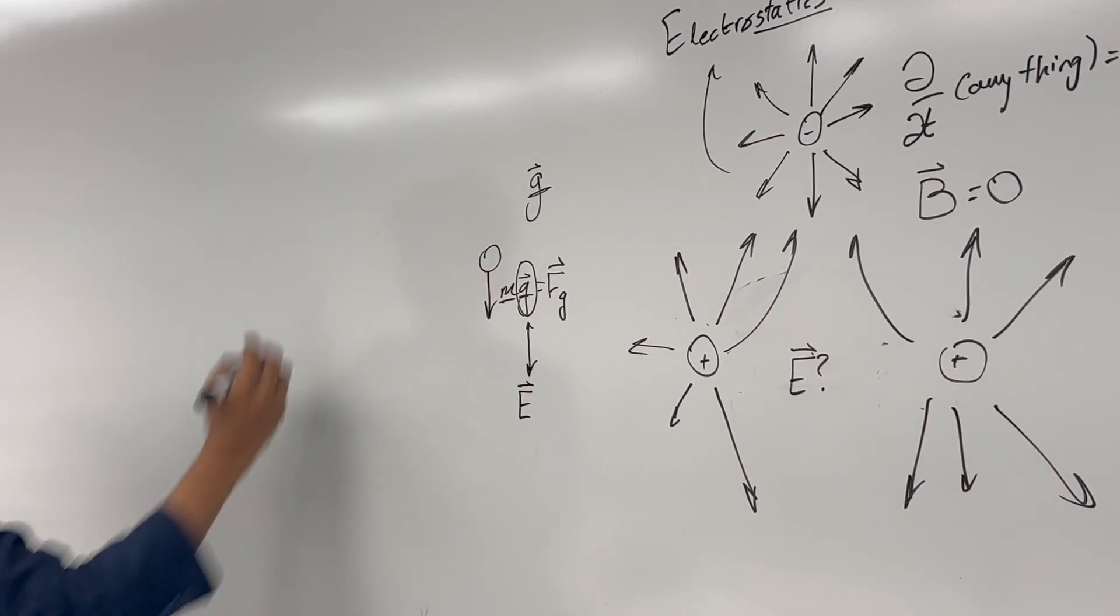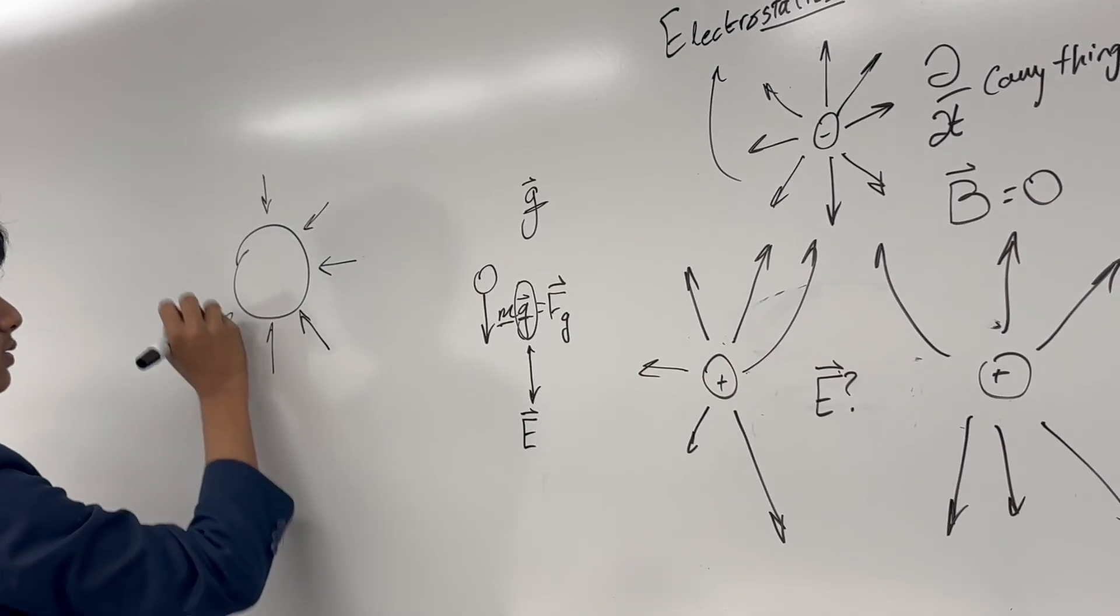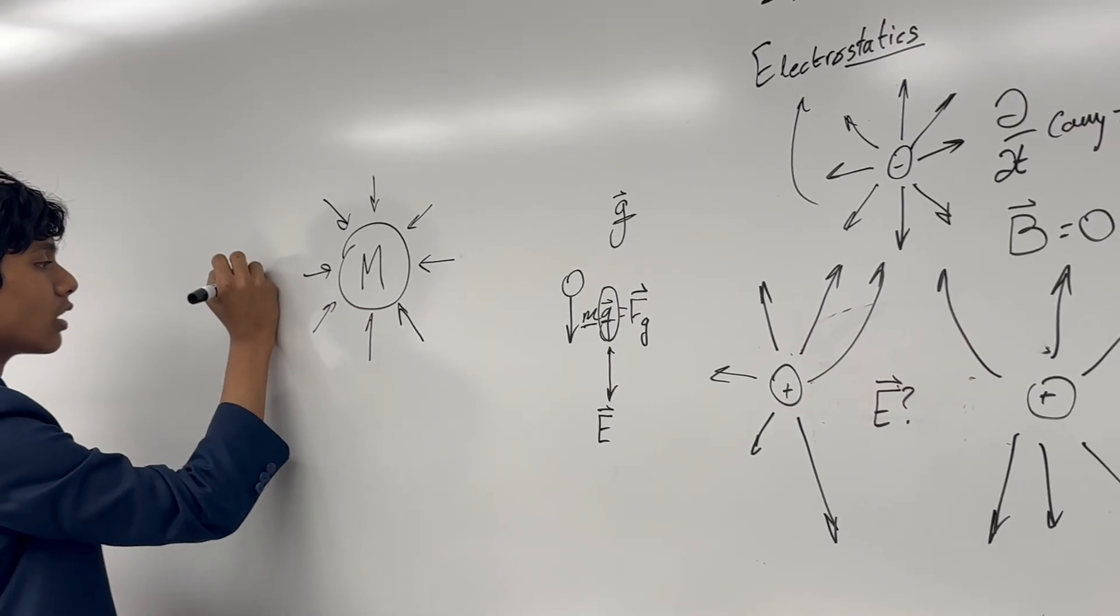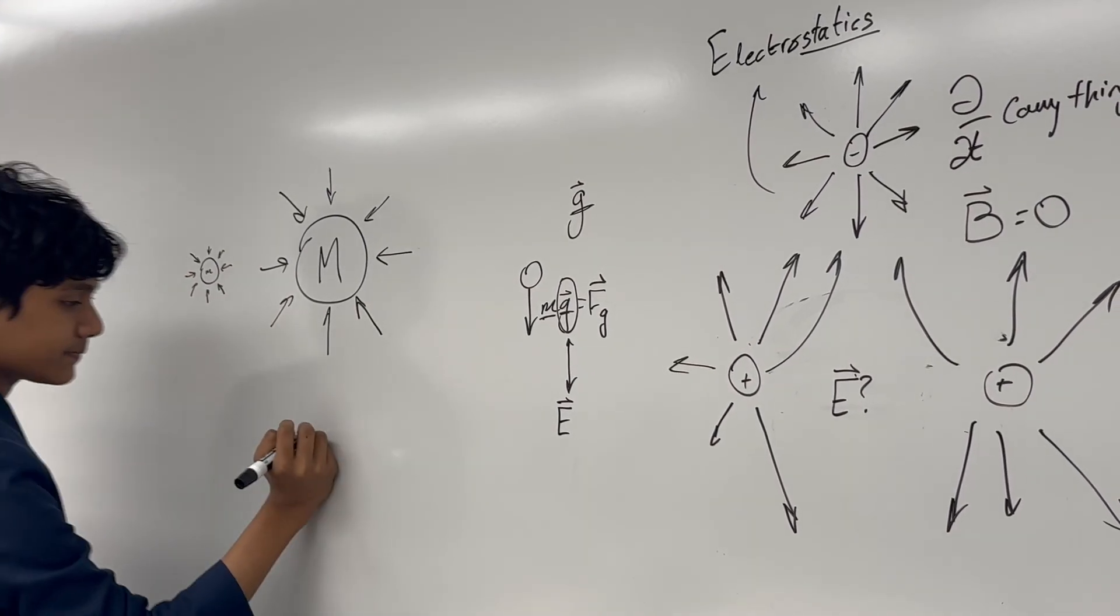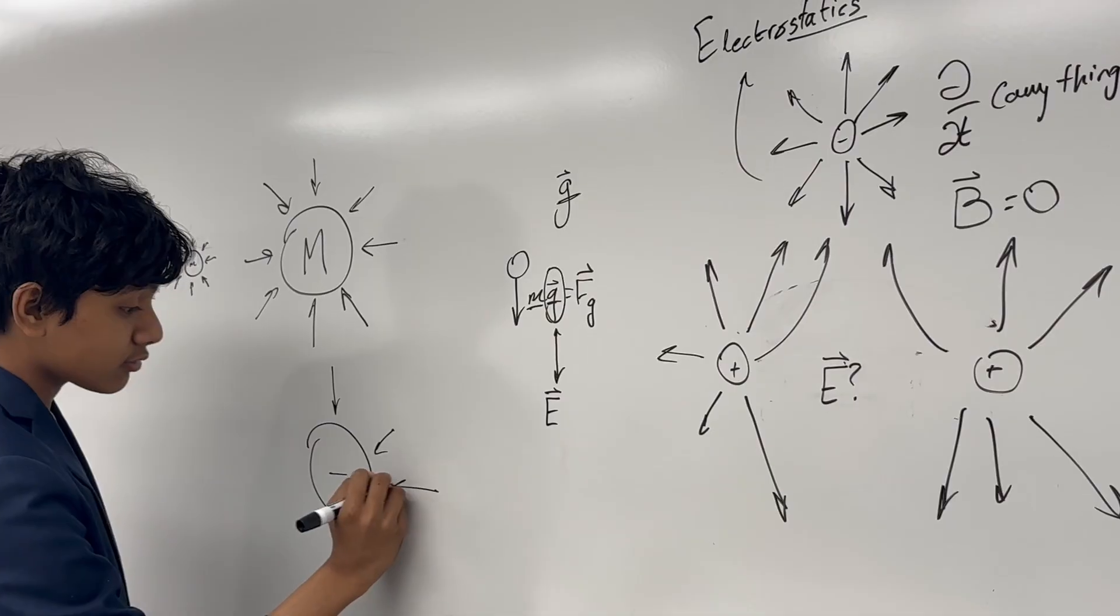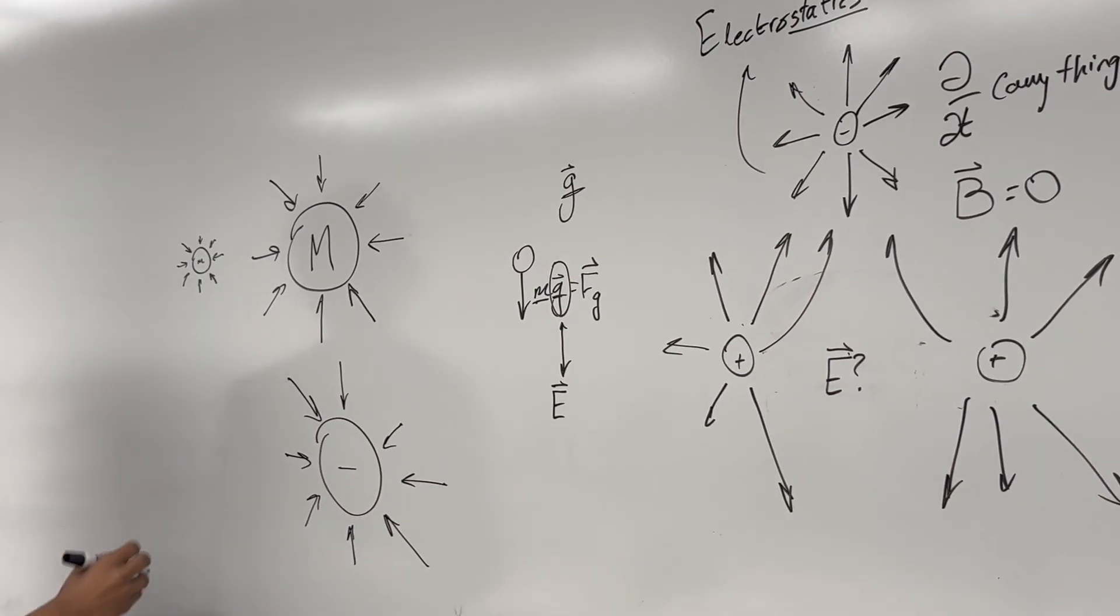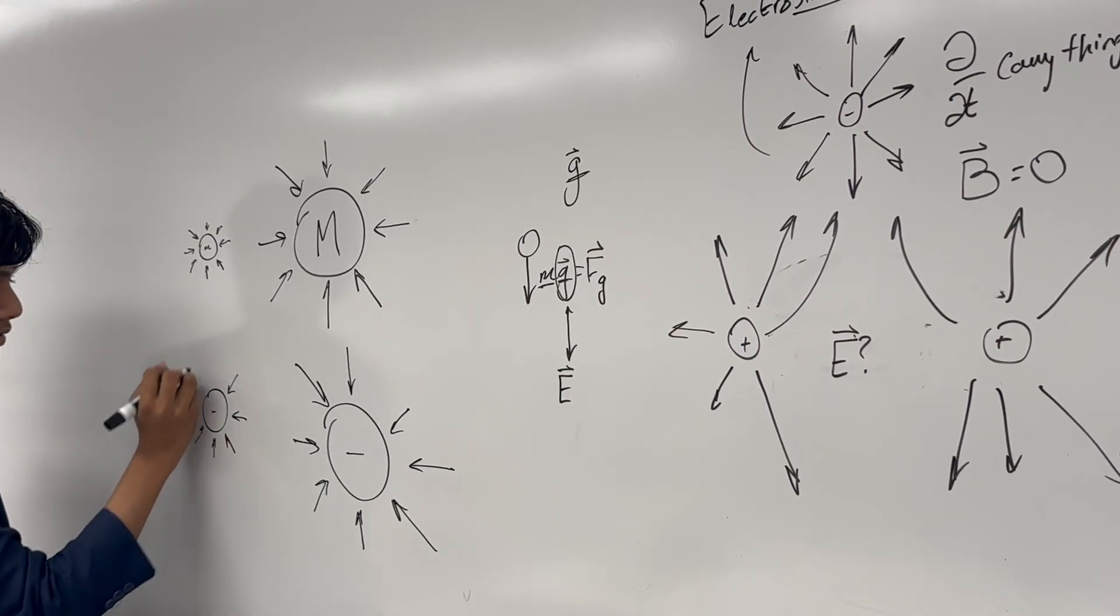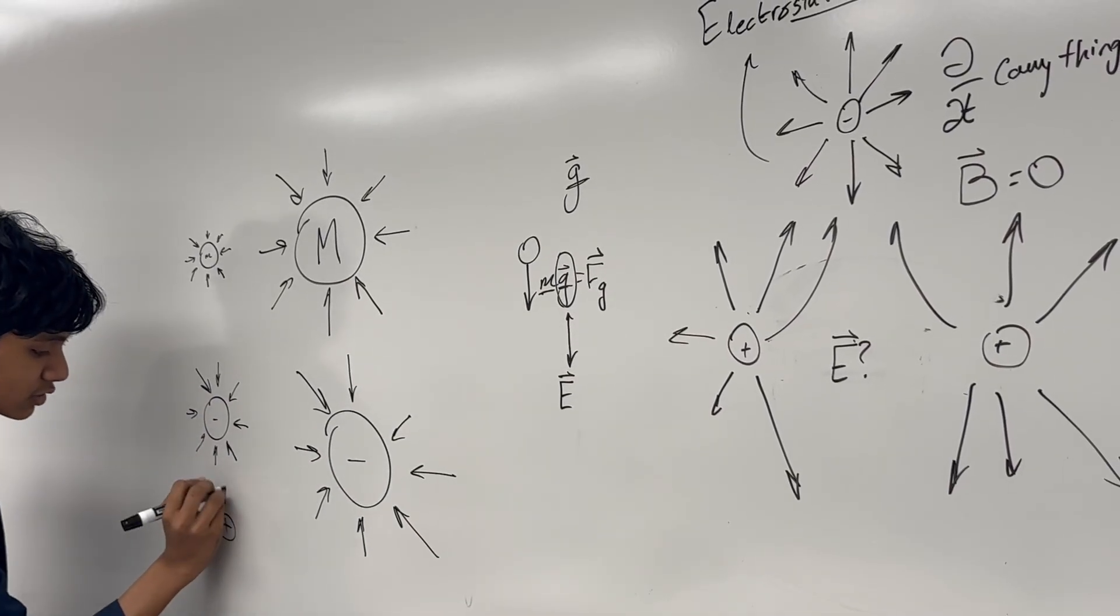Now, the analog to this is the electric field. It acts the same way a gravitational field does, except gravitational fields are stronger for objects with bigger mass and weaker for objects with smaller mass. In a similar way, electric fields are stronger for charges with more magnitude. For negative charges, it's attractive, and for positive charges, it's repulsive.